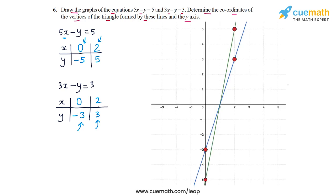So here are what the lines will look like. So for the first line, the two solutions are 0, minus 5 and this point here which is 2, 5 and this green line is the line corresponding to the first equation, 5x minus y equal to 5.